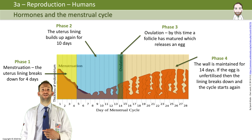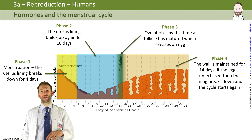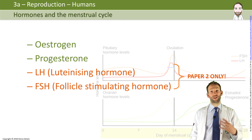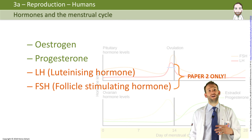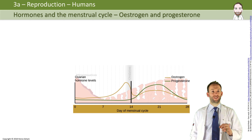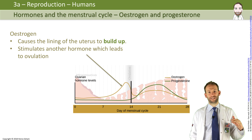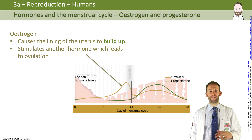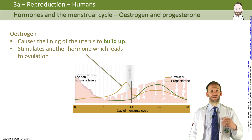The cycle is controlled by four hormones. If you're doing dual science, you need to know about estrogen and progesterone, but otherwise you need to know about all four — LH and FSH as well. Estrogen and progesterone are both produced in the ovaries. Estrogen spikes early on, between about day seven and day twelve, and what it does is cause the lining to build up — getting thicker and thicker.